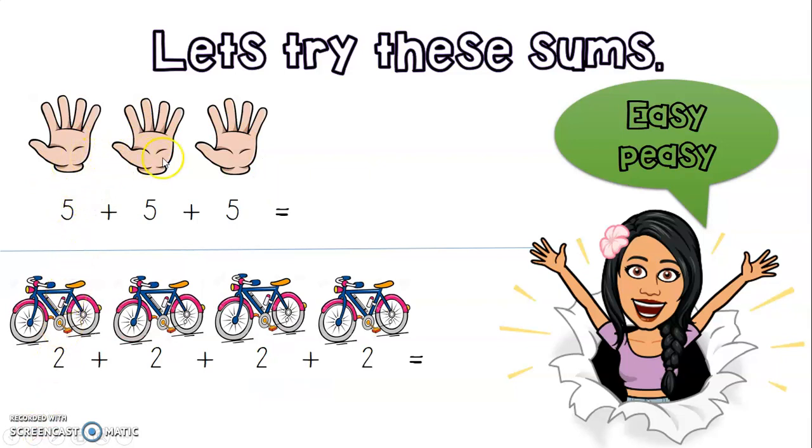Now here we have three hands. Our sum is 5 + 5 + 5. How could we get this answer? Yes, counting in fives: five, ten, fifteen. Well done, everyone! Our answer is fifteen.